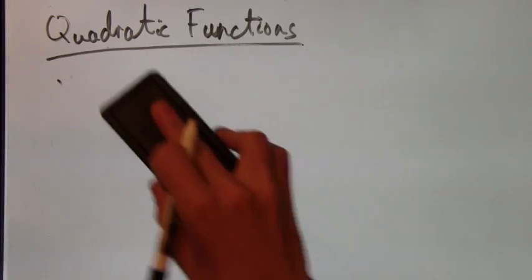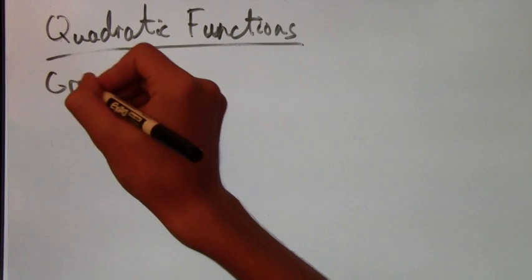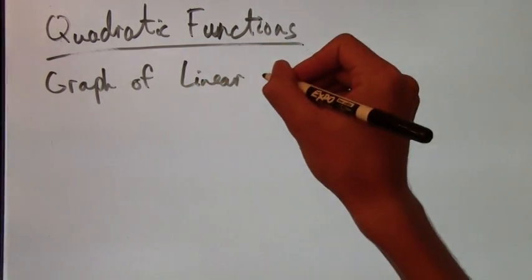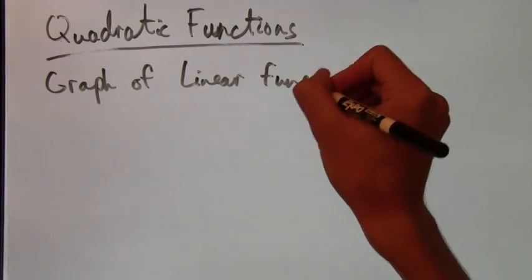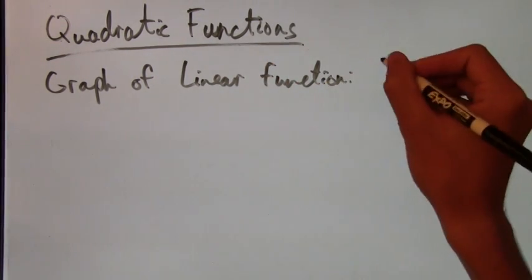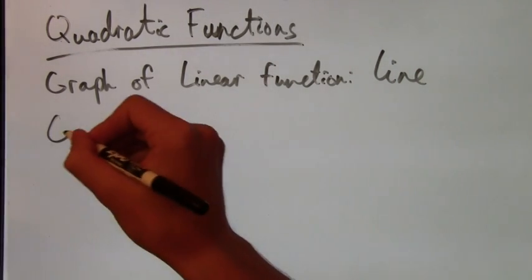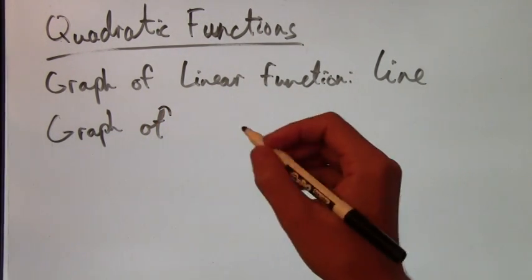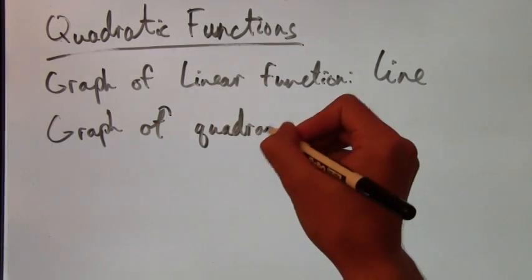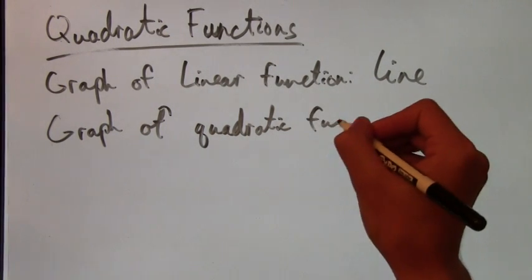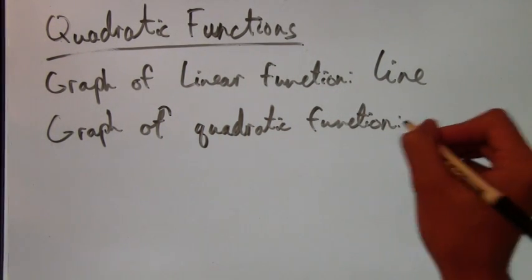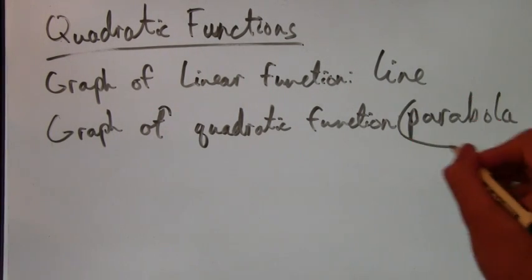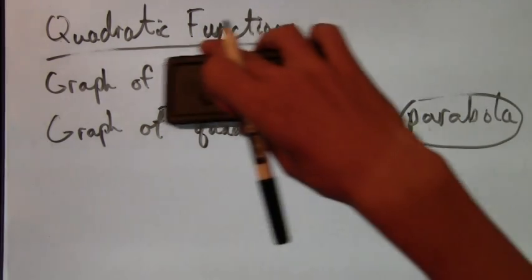So now, let's take a look at what the graph of a quadratic function looks like. The graph of a linear function is always a line. That we know. But what exactly does the graph of a quadratic function look like? Well, before we look at what it looks like, the name of the graph of a quadratic function is a parabola. So just remember this name. That's what you call the graph of a quadratic function.